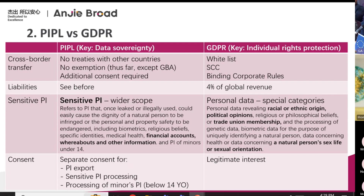For example, there's a concept of separate consent, meaning that on top of a typical standard consent — where you put a tick and agree to transmit your data — separate consent means there may be another page or additional language you need to add to your consent in order to extract PI from China. This applies regardless of whether you are located in China, have a subsidiary in China collecting on your behalf, or are in Europe collecting data from China.